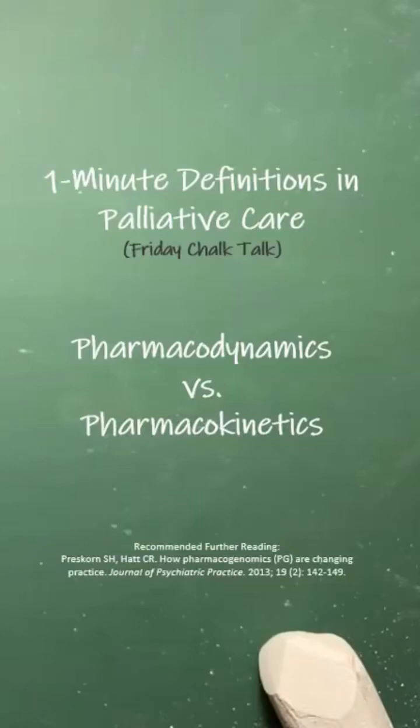Pharmacokinetics and pharmacodynamics are intimately related, as Presscorn and Haught outline in their paper. There are two of three critical parts of the equation of how the body is impacted by a drug.